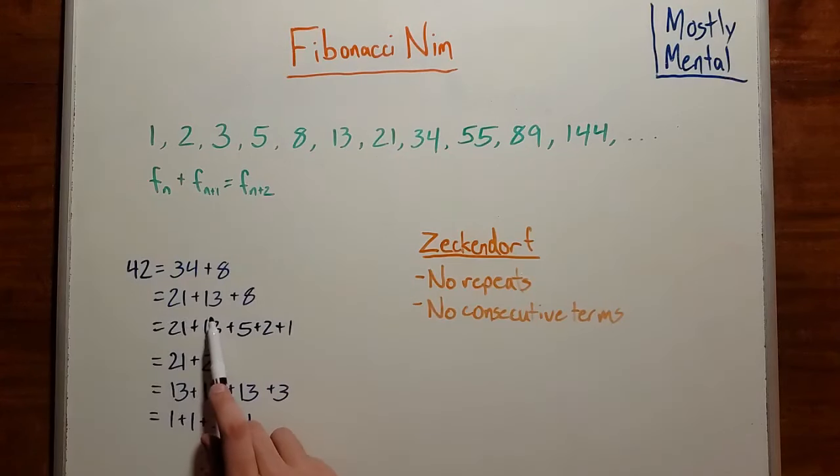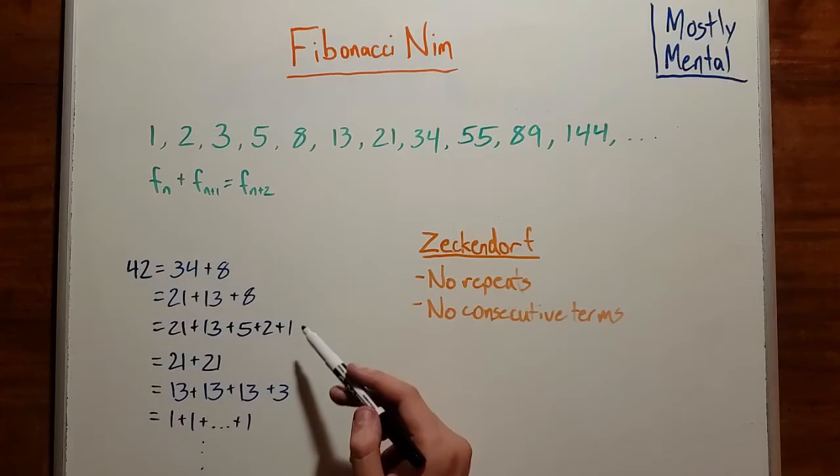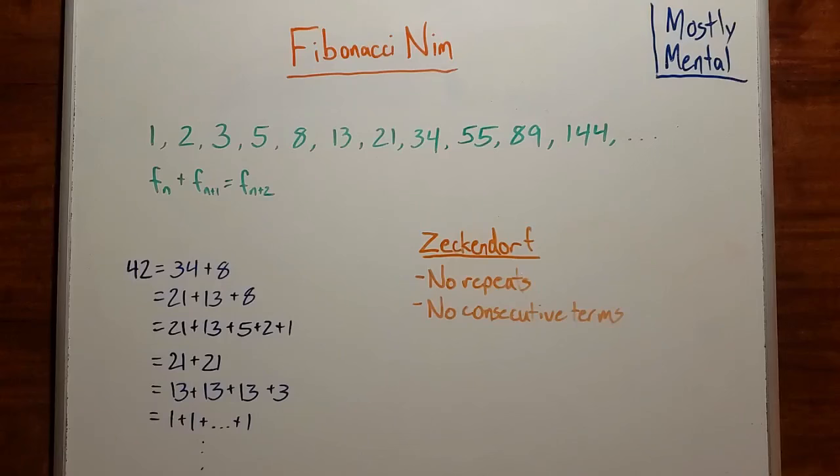We could even write it as the sum of 42 ones. But that kind of feels like cheating, so maybe let's add some restrictions. First of all, we don't want a big pile of repeated terms like this, so we'll add the rule that there are no repeats.